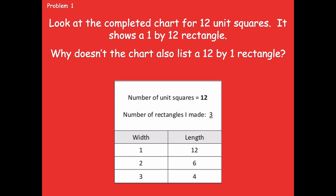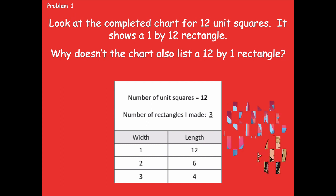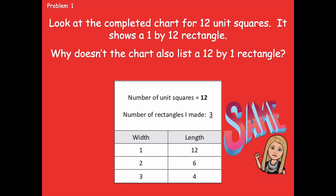Why doesn't the chart also list a 12 by 1 rectangle? It lists a 1 by 12 — why not list a 12 by 1? Because they're really the same, right? We're just rotating or turning them. So if they have the same factors just in a different order, we don't want to list both. You only want to list the ones that are different.